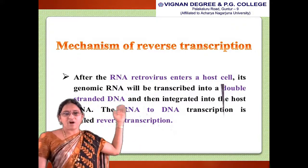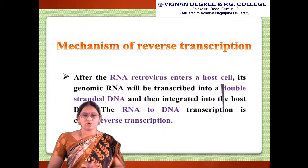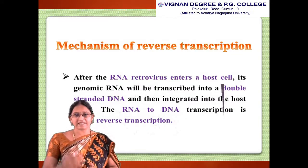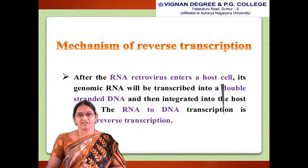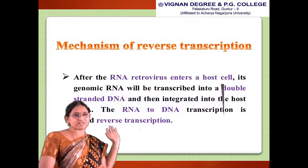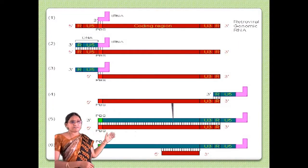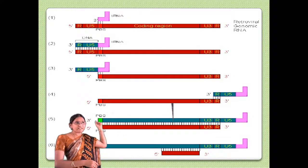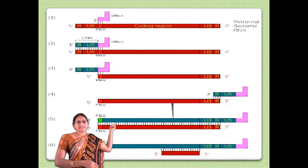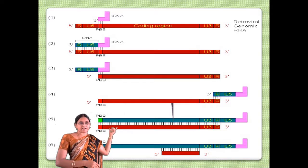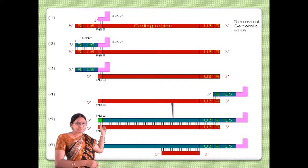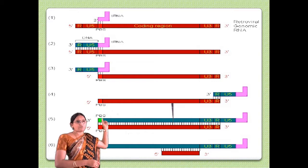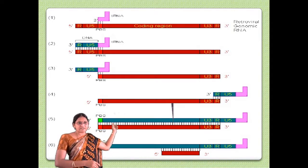Regarding the mechanism of reverse transcription: after the RNA retrovirus enters a host cell, its genomic RNA will be transcribed into double-stranded DNA and then integrated into the host DNA. The red-colored region indicates the retroviral genomic RNA, which runs in the 5' to 3' direction. From the 5' side, there are repeated sequences followed by an untranslated region — the repeat followed by the U5 region (untranslated 5' region).